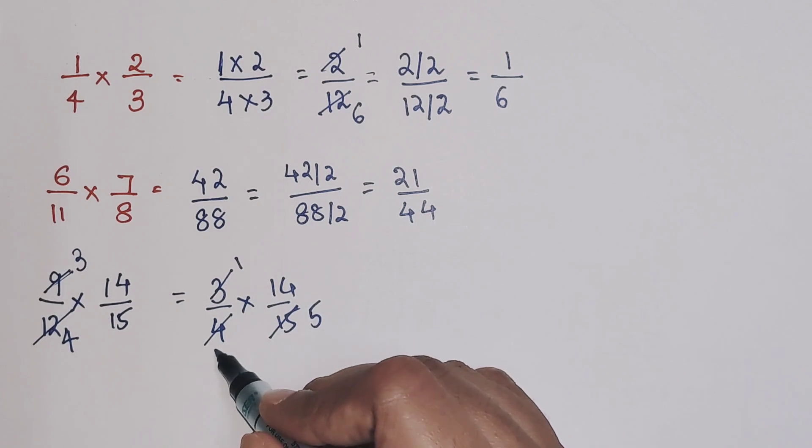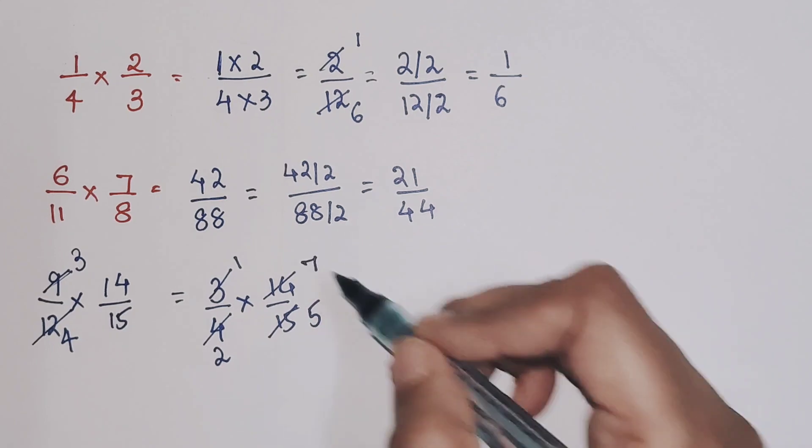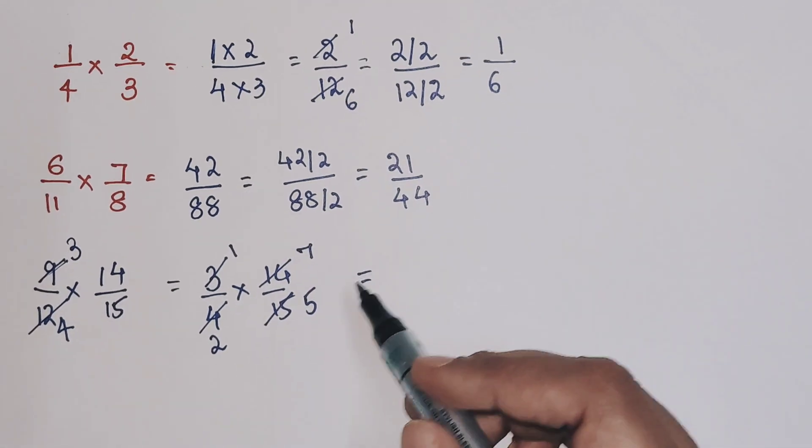So here I can divide both of them by 2. So 4 divided by 2 gets you 2, and 14 divided by 2 gets you 7. So your final answer now turns out to be, this is very important...